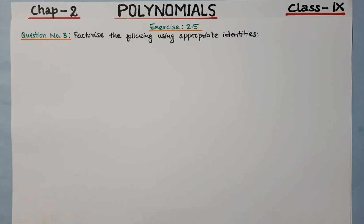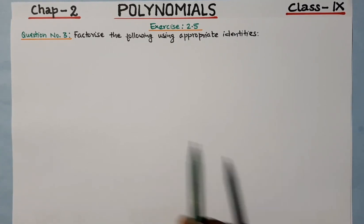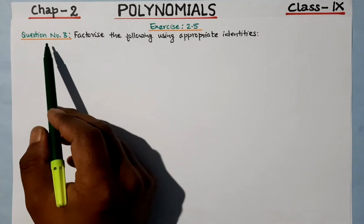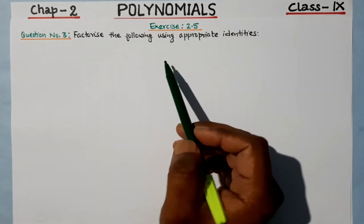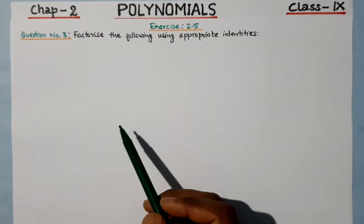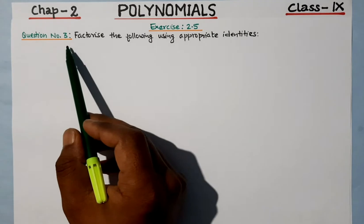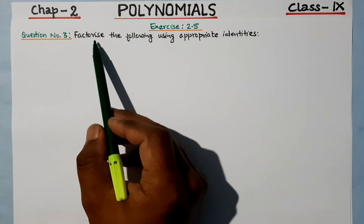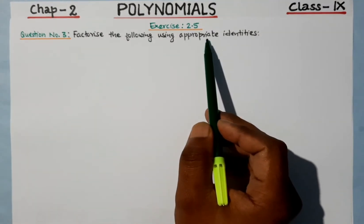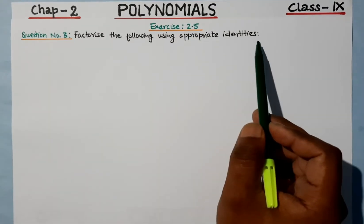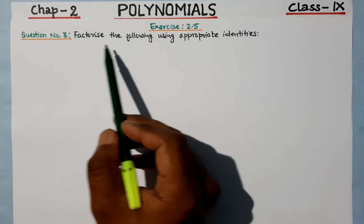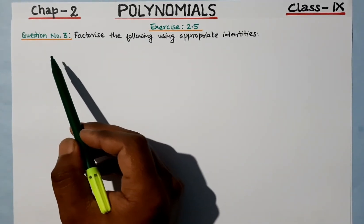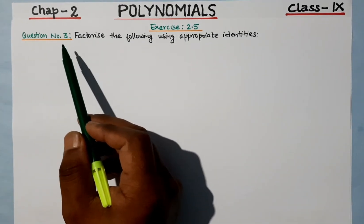Hello my dear children, welcome to our math class. In this class we will solve question number 3 from exercise 2.5. We have to factorize the following using appropriate identities.